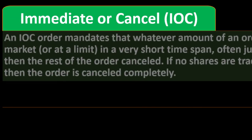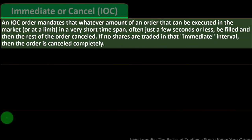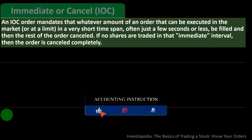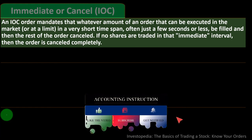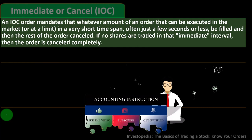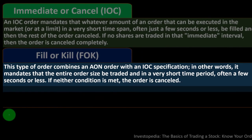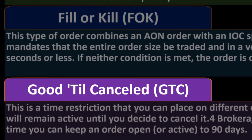An immediate or cancel (IOC) order mandates that whatever amount of an order can be executed in a very short time span — often just a few seconds or less — be filled, and the rest of the order canceled. If no shares are traded in that immediate interval, the order is canceled completely. A fill or kill (FOK) order combines an AON order with an IOC specification — it mandates that the entire order size be traded in a very short period, otherwise the order is canceled.